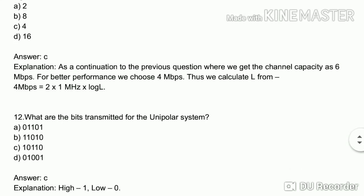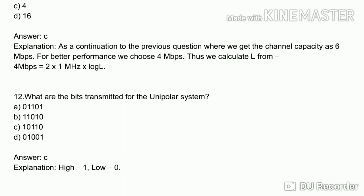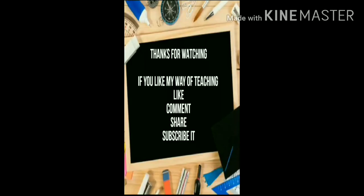Twelfth question: what bits are transmitted for the unipolar system? In a unipolar system, the data to transmit is 1010. For a unipolar signal, 1 is represented as high and 0 as low. So 1010 is transmitted as: high, low, high, low — starting high then low. Thank you.